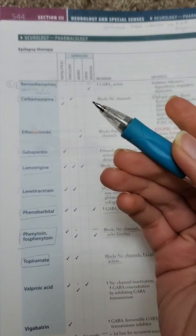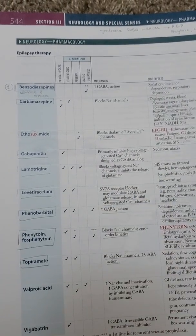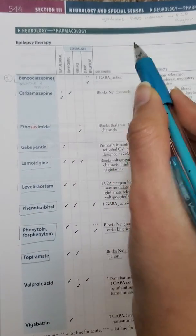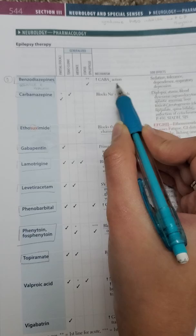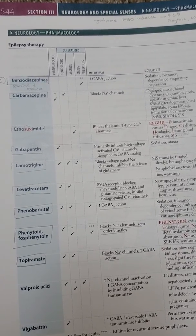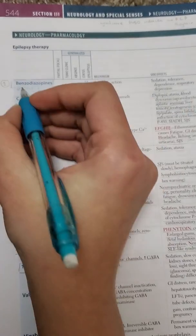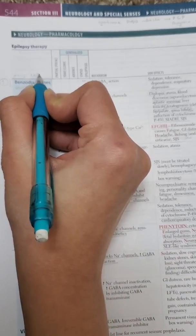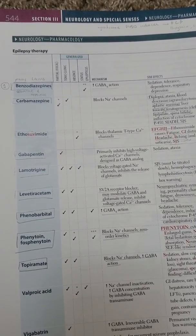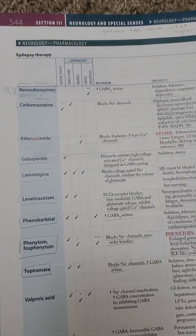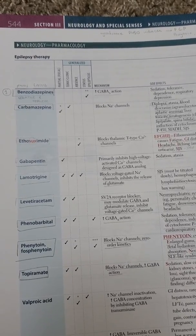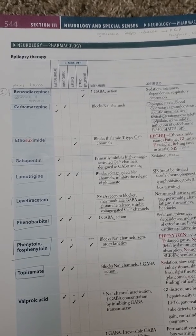Barbiturates include phenobarbital — these are sedative and hypnotic drugs. Benzodiazepines are basically used for status epilepticus and they increase GABA action, causing sedation. The pams and lams are all included in benzodiazepines. They work through GABA-A receptors, which are important for sedation — so if you're having anxiety attacks or before going to the dentist, these are the drugs usually prescribed, like midazolam.